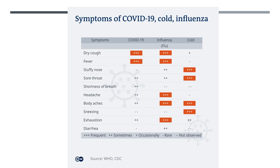Around one out of every six people who gets COVID-19 becomes seriously ill and develops difficulty breathing. Older people, and those with underlying medical problems like high blood pressure, heart problems, or diabetes, are more likely to develop serious illness. People with fever, cough, and difficulty breathing should seek medical attention.